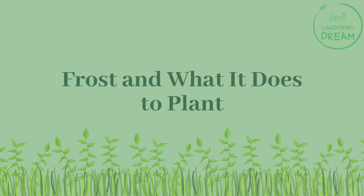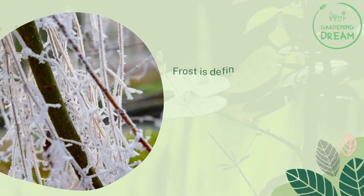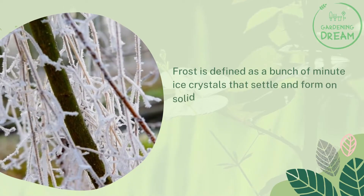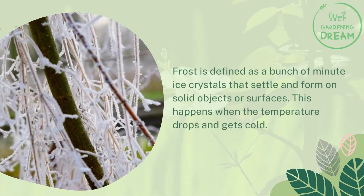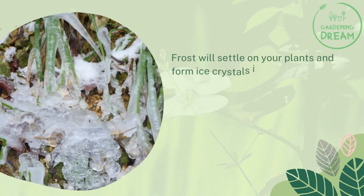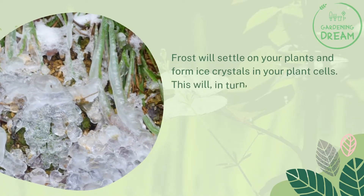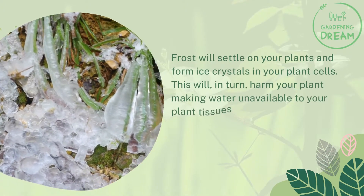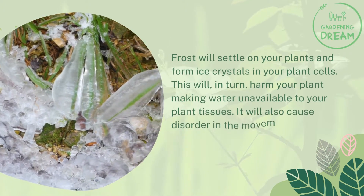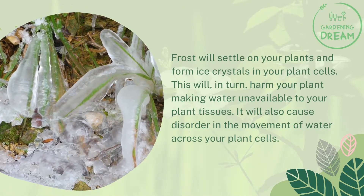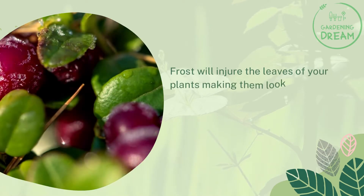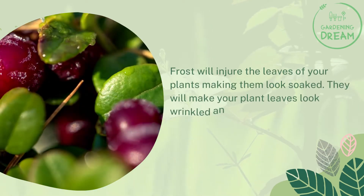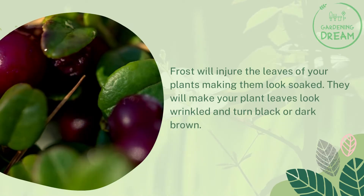Frost is defined as a bunch of minute ice crystals that settle and form on solid objects or surfaces. This happens when the temperature drops and gets cold. Frost will settle on your plants and form ice crystals in your plant cells, which will harm your plant by making water unavailable to plant tissues. It will also cause disorder in the movement of water across plant cells, injuring the leaves and making them look soaked, wrinkled, and turn black or dark brown.